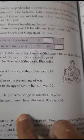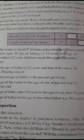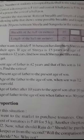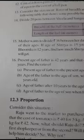Mother wants to divide rupees 36 between her daughters Shreya and Bhumika in the ratio of their ages. If age of Shreya is 15 years and age of Bhumika is 12 years, find how much Shreya and Bhumika will get.